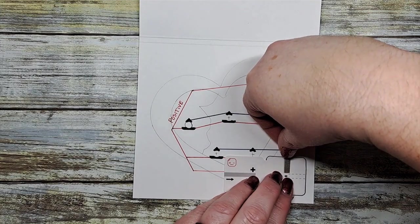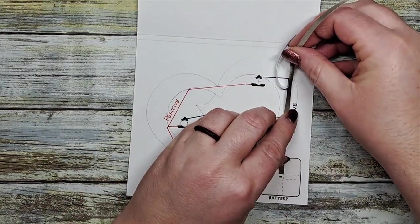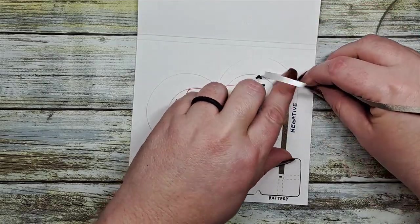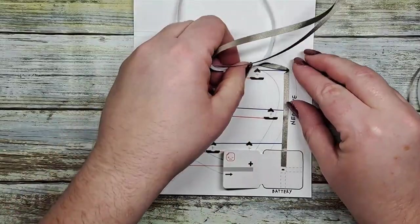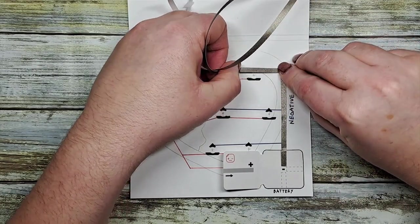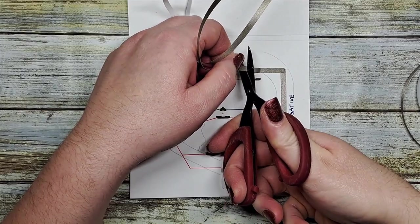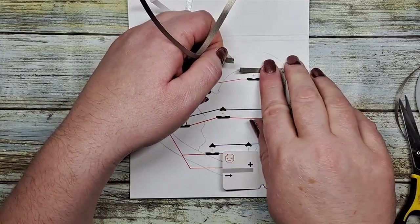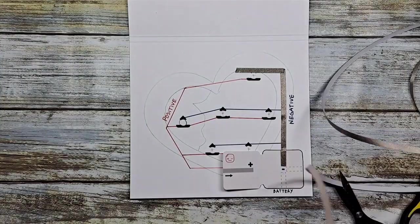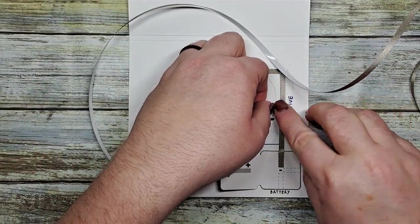Now let's take our conductive fabric tape, and we're going to start on the negative side. We're going to start on the inside of that battery holder, and we're going to follow all of the blue lines that we've indicated right out to all six stickers. The conductive fabric tape is very easily cut. And you can just use your fingers to press and make contact with our conductive fabric tape.